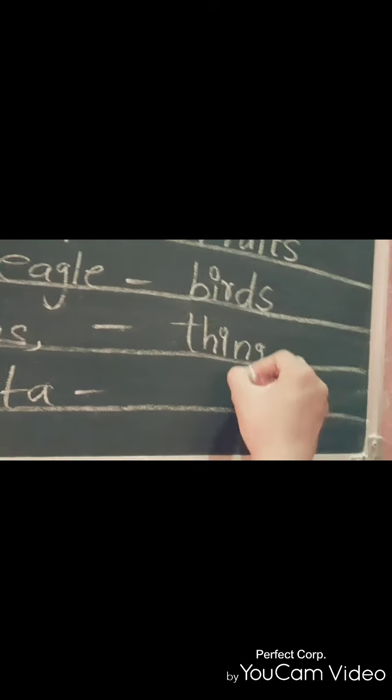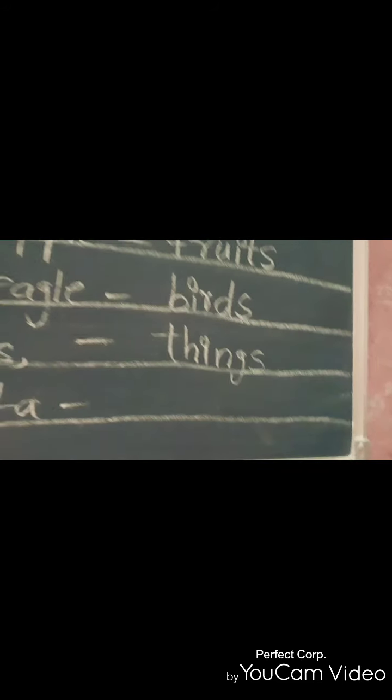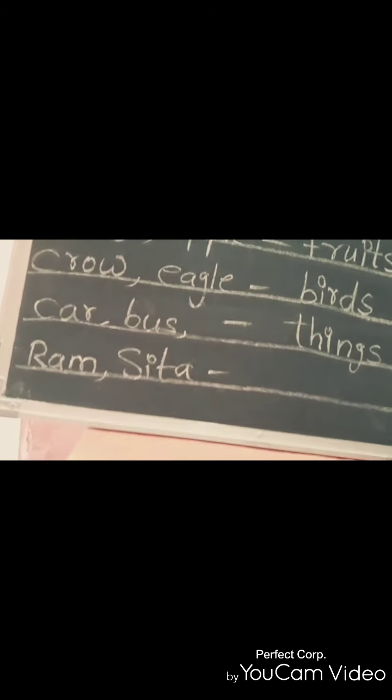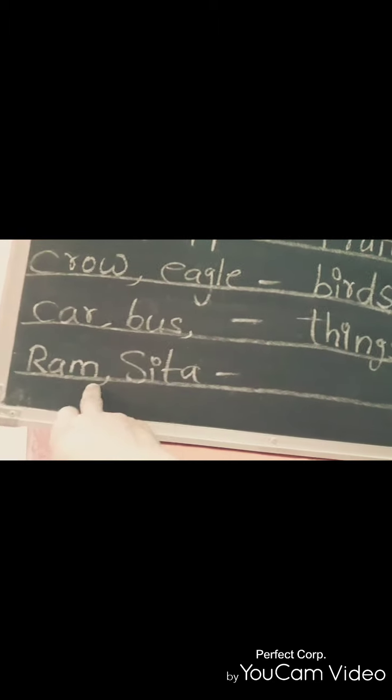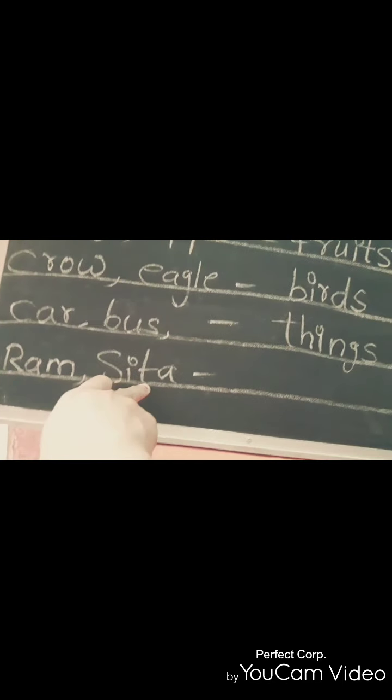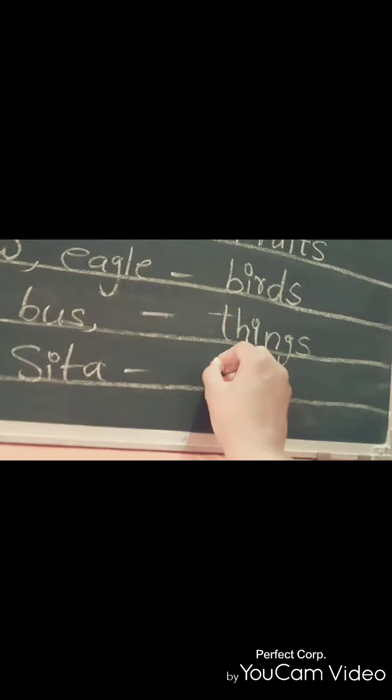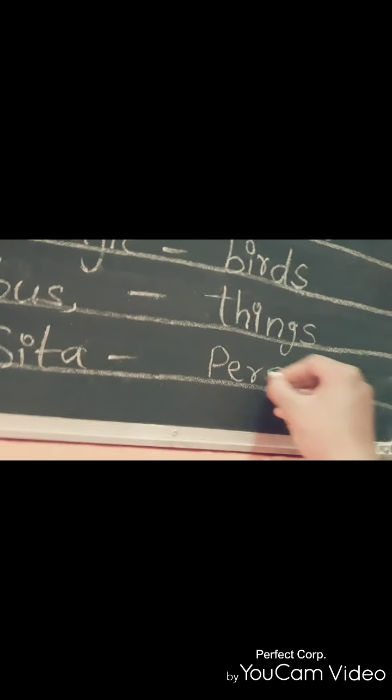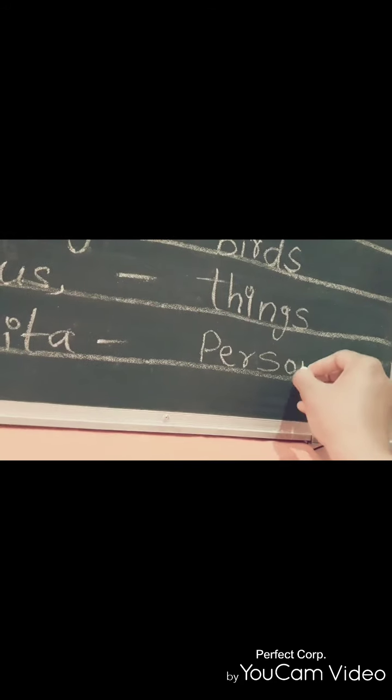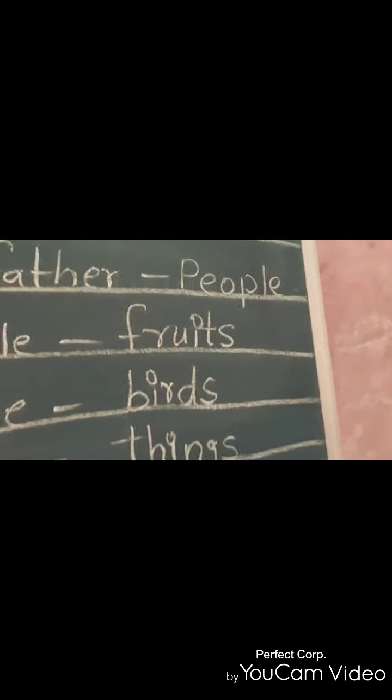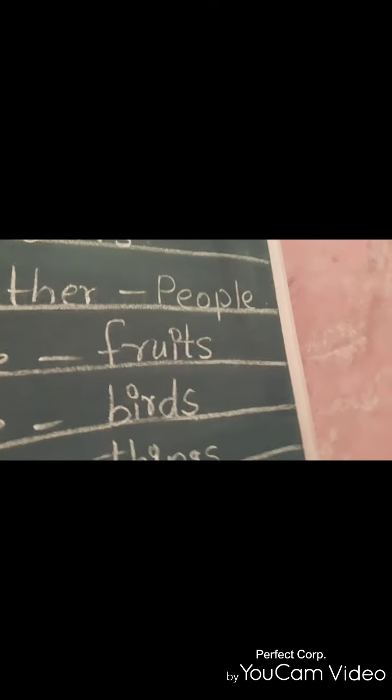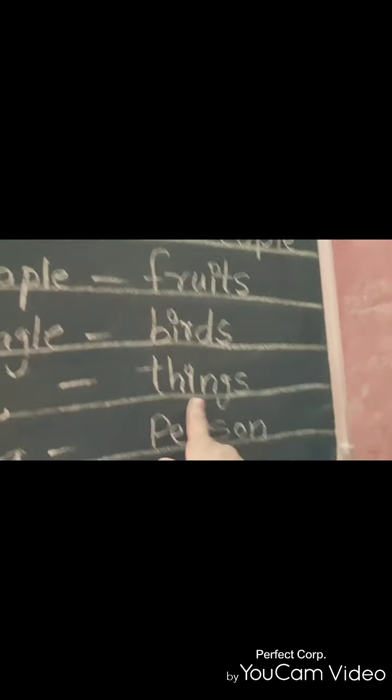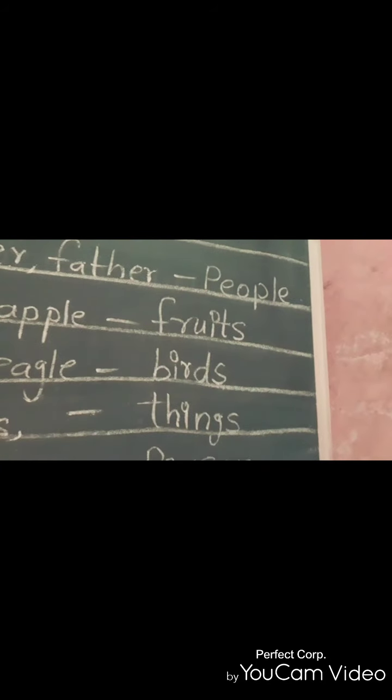In fifth line, I wrote the spelling of Ram Sita. It is the name of a person. So in previous classes, we studied that the words that stand for people, fruit, birds, things, person are known as naming words.